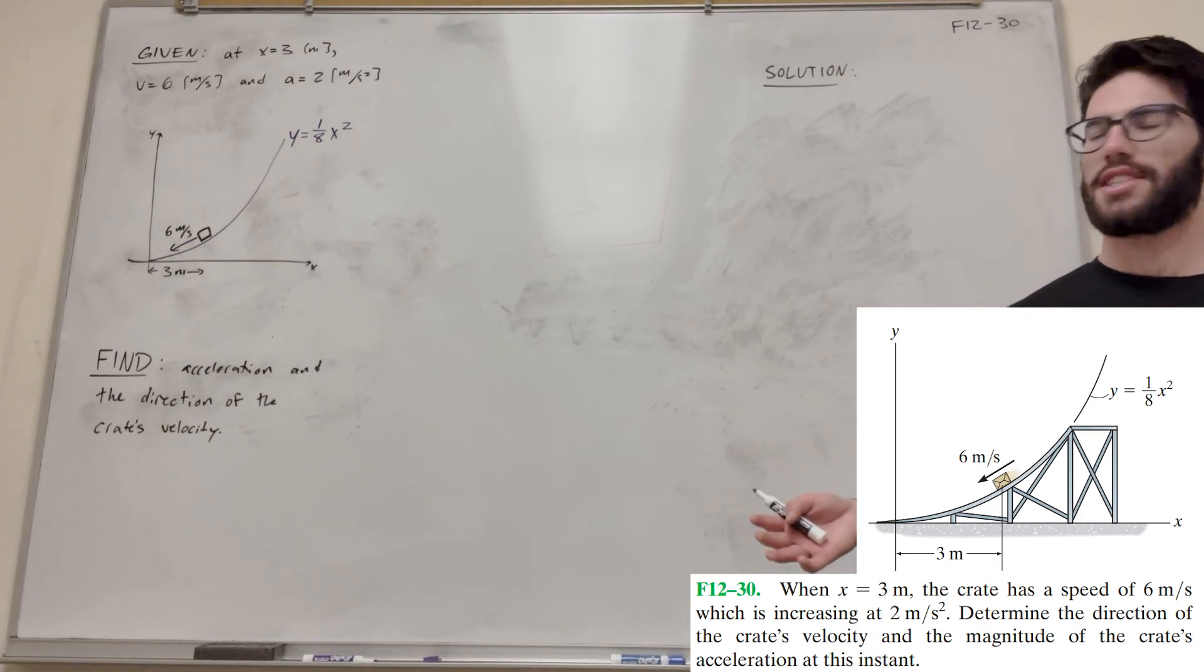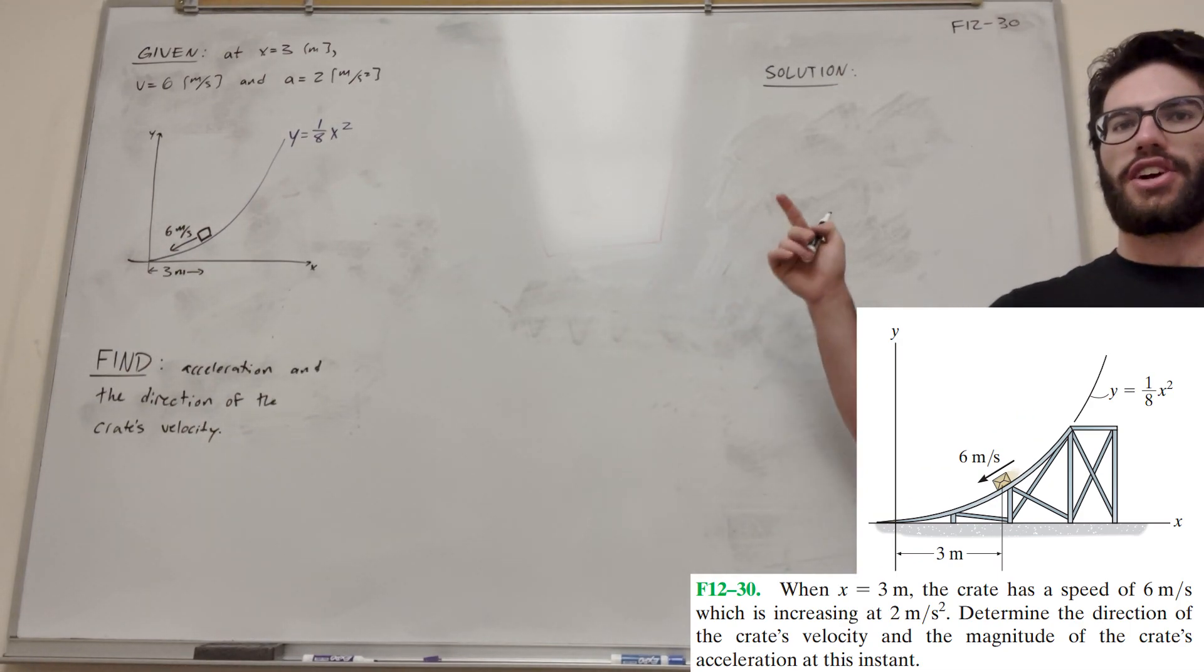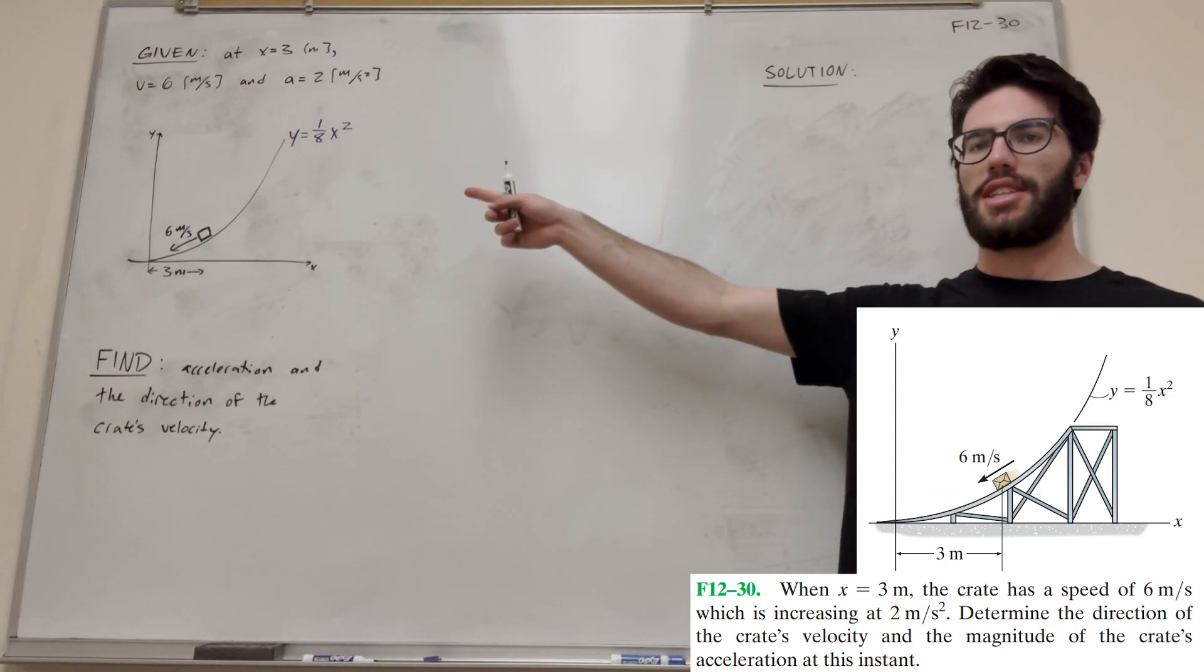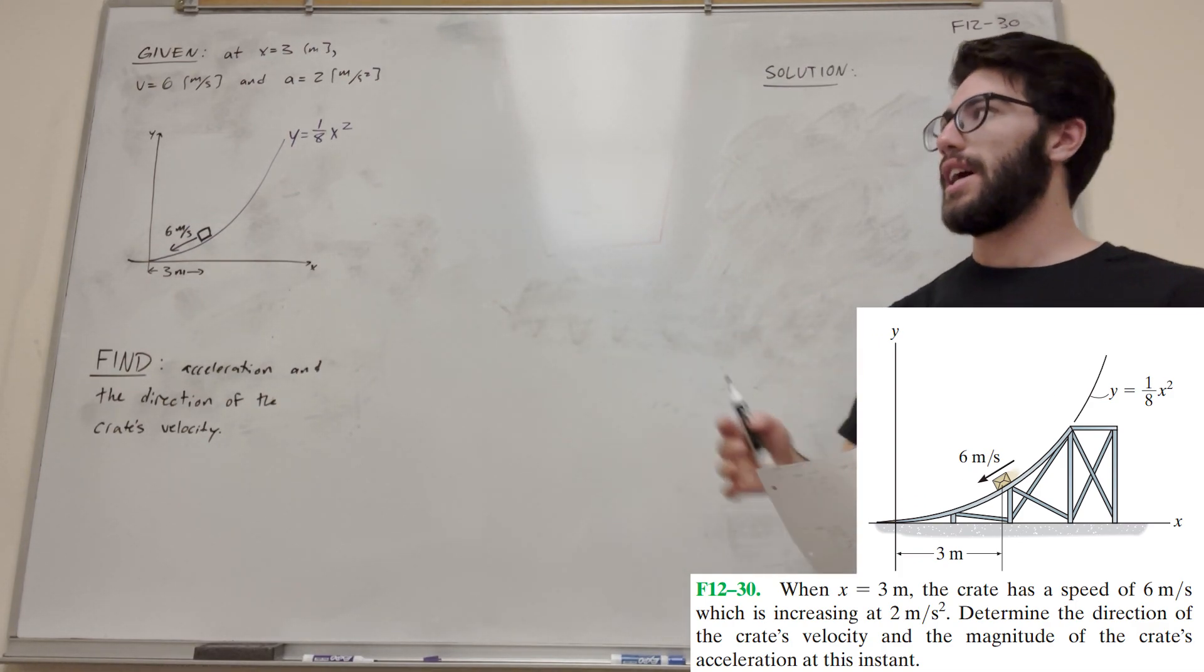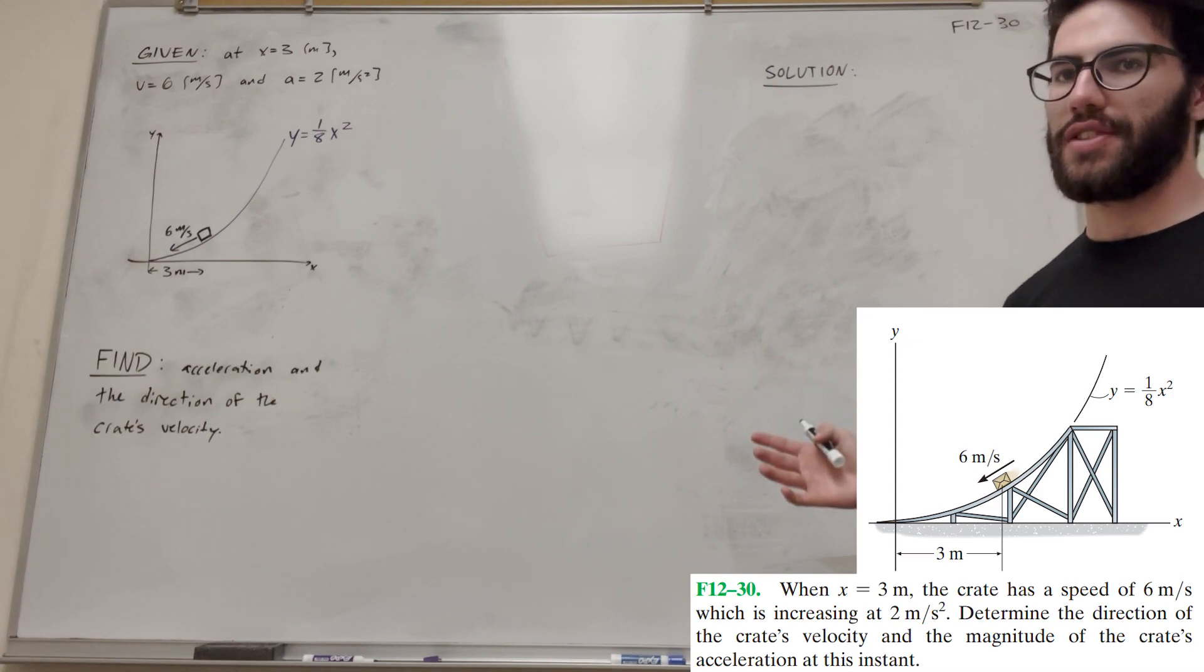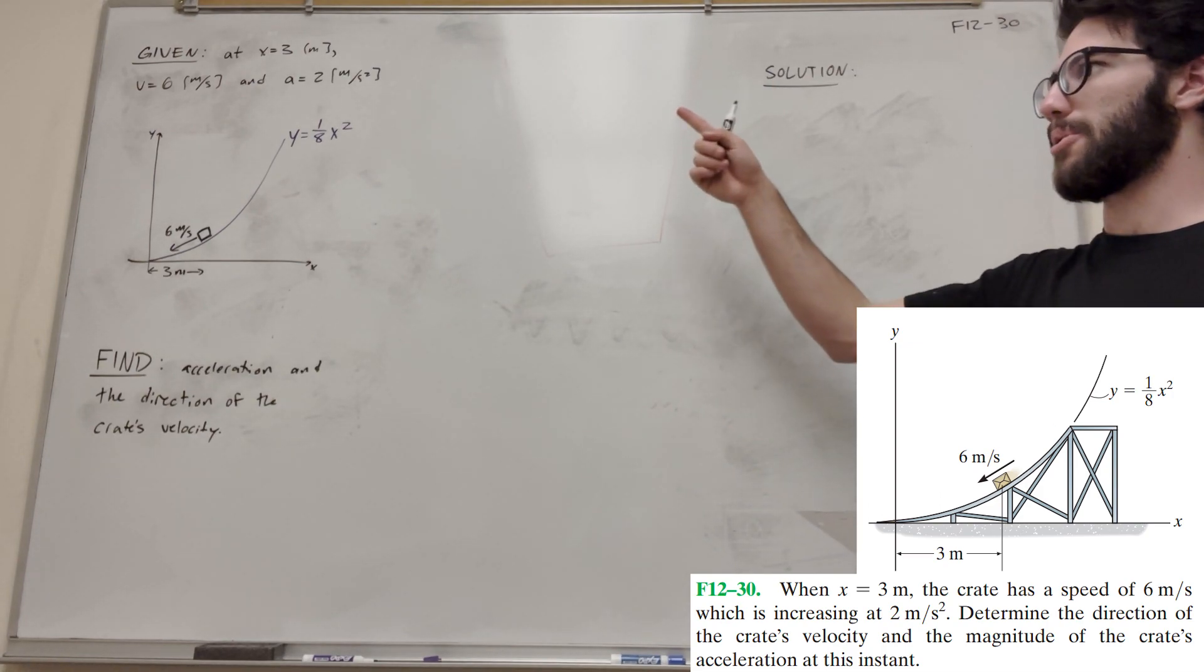What's up, Cal gang? Welcome back to some dynamics. So we've got this problem here. It's a crate going down this slope, defined by y equals an eighth of x squared. And our goal is to find the acceleration in the direction of the crate's velocity at x equals 3.